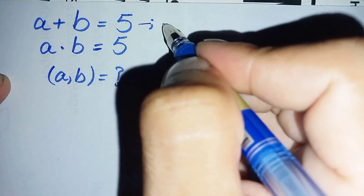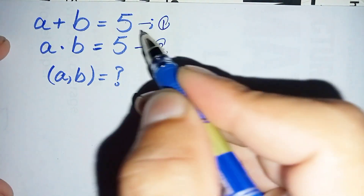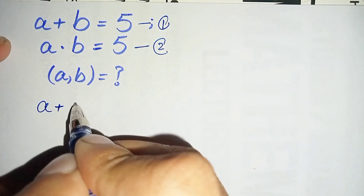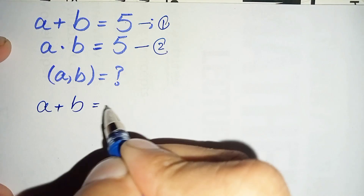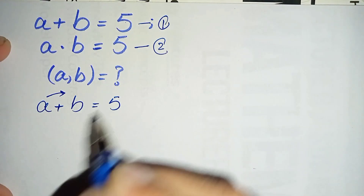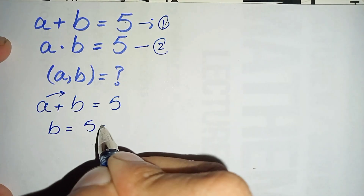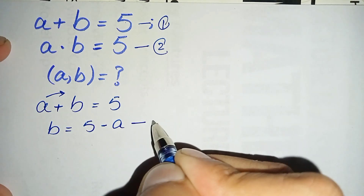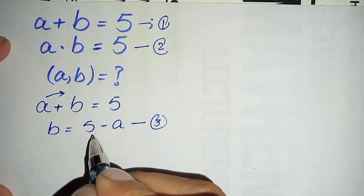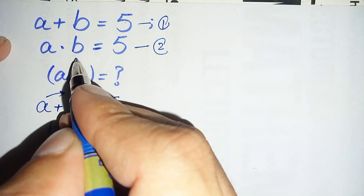Let us suppose the equation a plus b equals 5 is equation number one, and the equation ab equals 5 is equation number two. From equation number one, we move a to the right-hand side, so it becomes b equals 5 minus a. Let us call this equation number three.